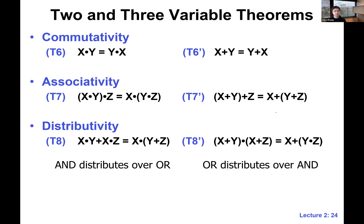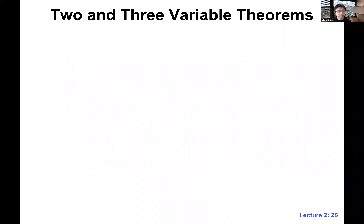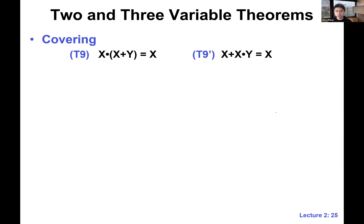So those are the common theorems you're familiar with. Now here are a few less common ones. The first is called covering, T9. This says that y is covered — on the left-hand side y is present, but on the right-hand side we only have x. In this case y is useless, it's already covered — that's why it's called covering.